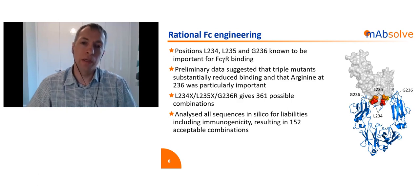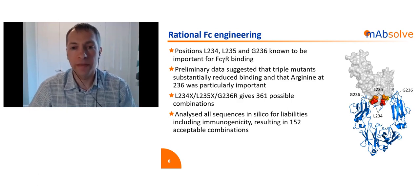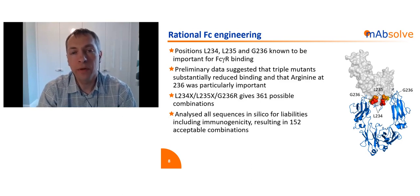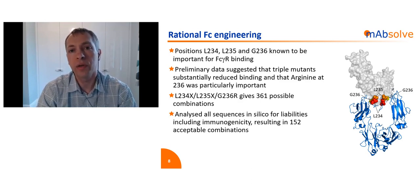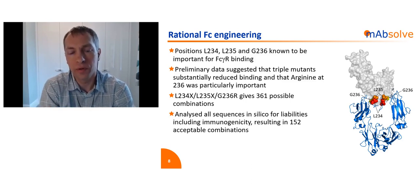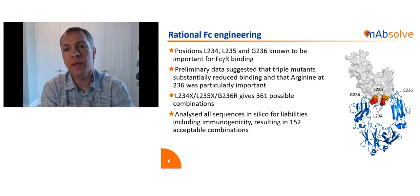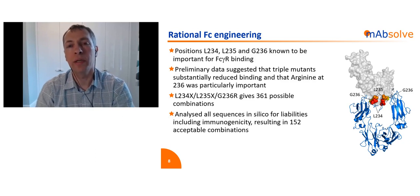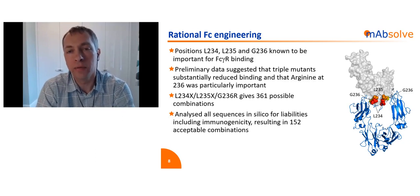As I said earlier, leucines 234 and 235 tend to be focused on for silencing, but it's also known that the next amino acid along — glycine at 236 — is also critical for binding to FC receptors. My background is as a structural biologist, so I sat in front of a computer for a number of hours and days, trying to understand the different variants that had been generated previously, work out why some might behave better than others, and see if I could develop my own novel construct, particularly focusing around these three amino acid positions.